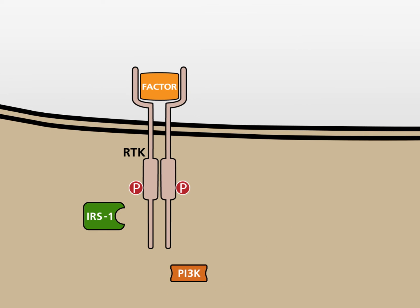The insulin receptor substrate 1, or IRS1, binds to the activated IGF1 receptor. For simplification, this receptor is depicted as a dimer. Receptor-bound IRS1 serves as a binding and activation site for the PI3 kinase.